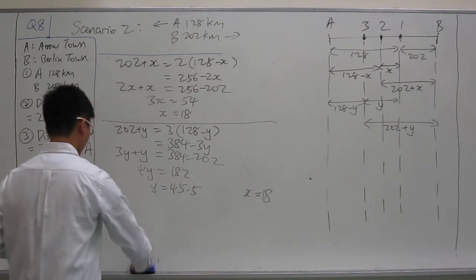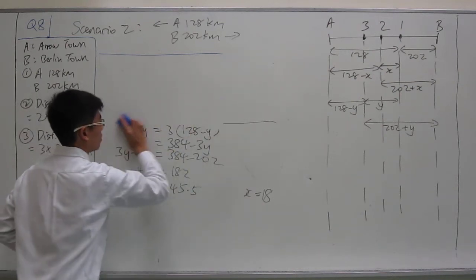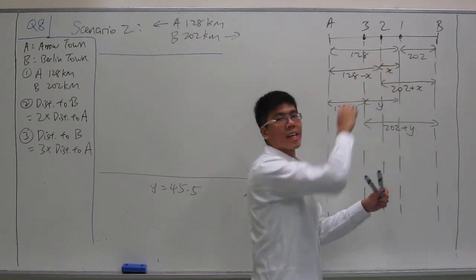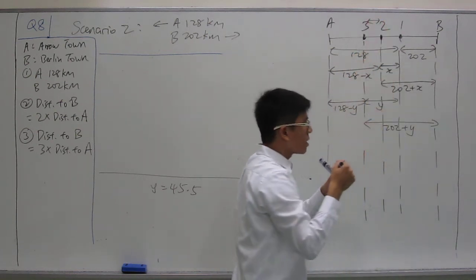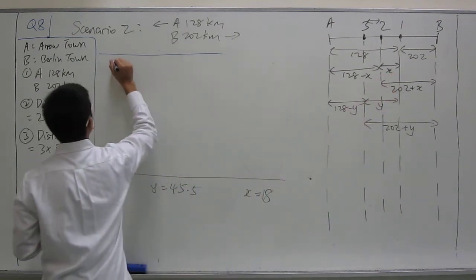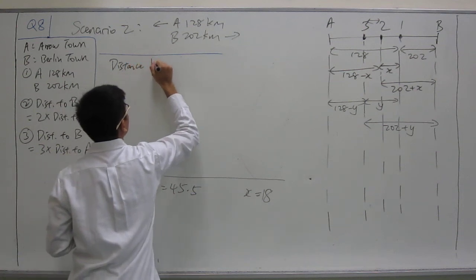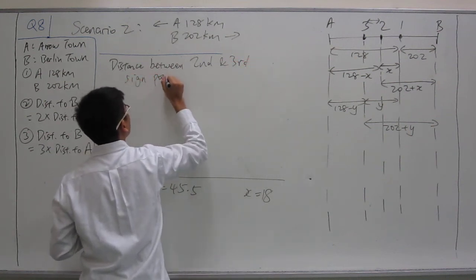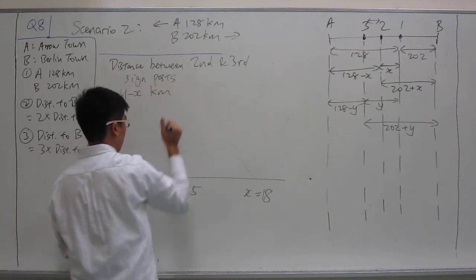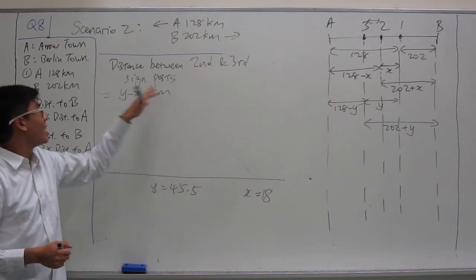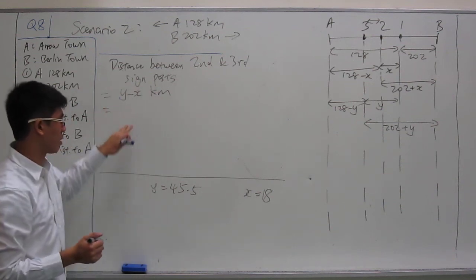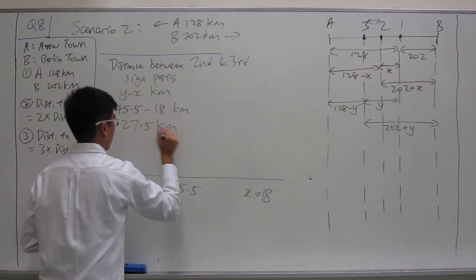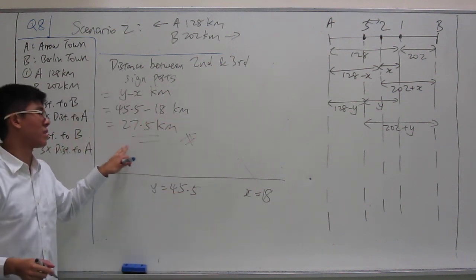We write x equals 18. Our objective is to find the distance between the second and third signposts, which is y minus x. So the distance equals 45.5 minus 18 km, which gives us 27.5 km. That's the answer for scenario 2.